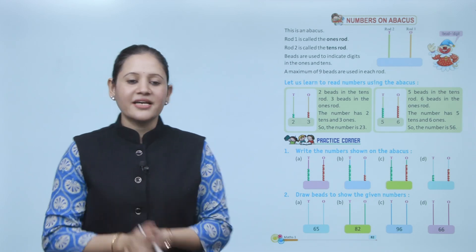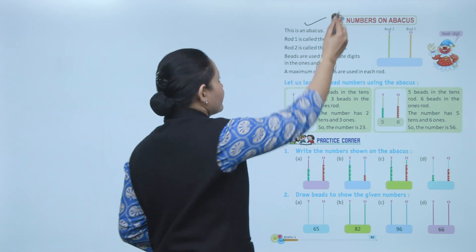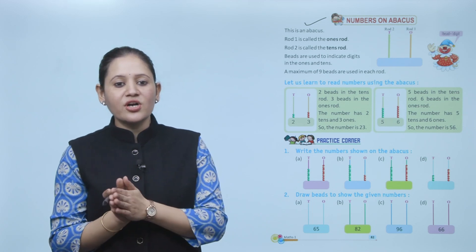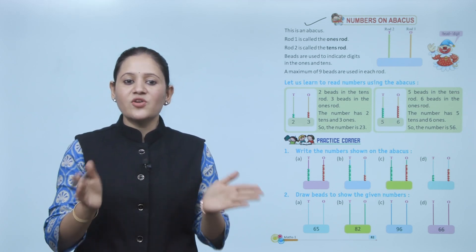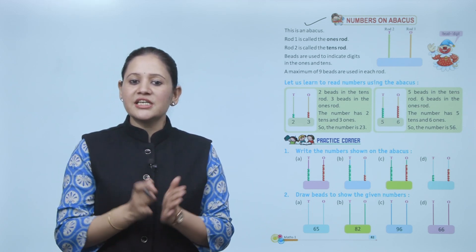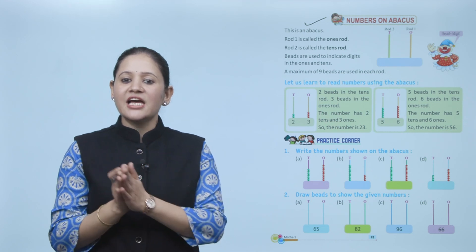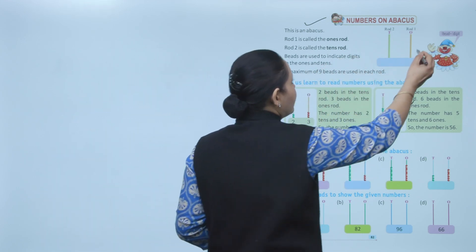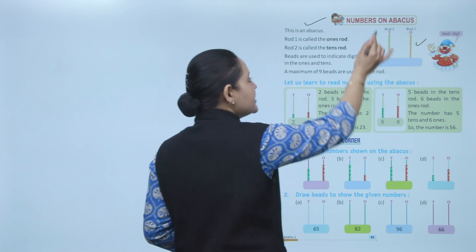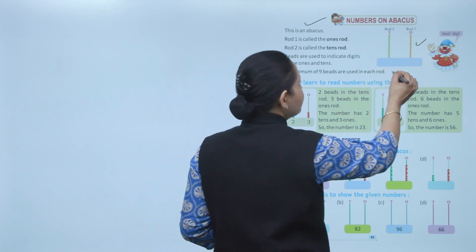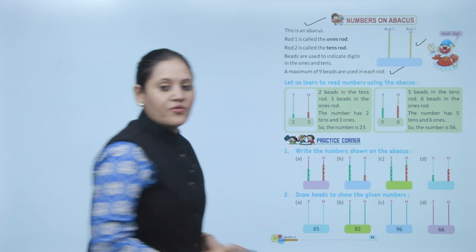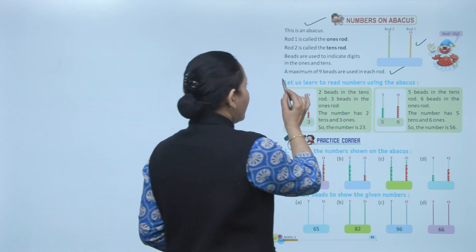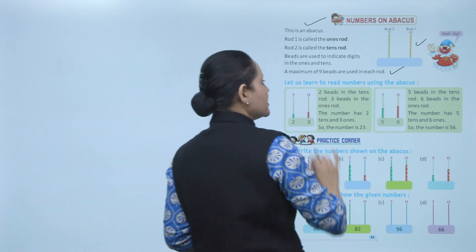Next is numbers on an abacus. Rod 1 is called the ones rod; rod 2 is called the tens rod. Beads are used to indicate digits in the ones and tens place. The abacus has 2 rods — rod 1 is for ones and rod 2 is for tens. One bead represents one digit. A maximum of 9 beads are used in each rod.